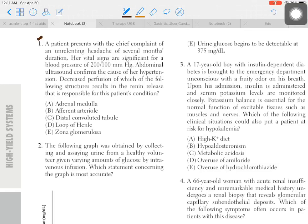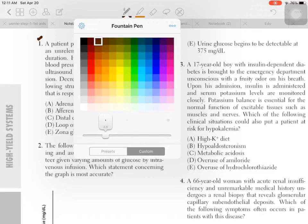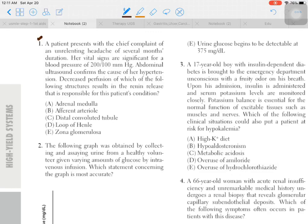Our first question: A patient presents with the chief complaint of an unrelenting headache of several months duration. Her vital signs are significant for blood pressure 200/100 mmHg. Abdominal ultrasound confirms the cause of her hypertension. Decreased perfusion of which of the following structures results in the renin release that is responsible for this patient's condition?